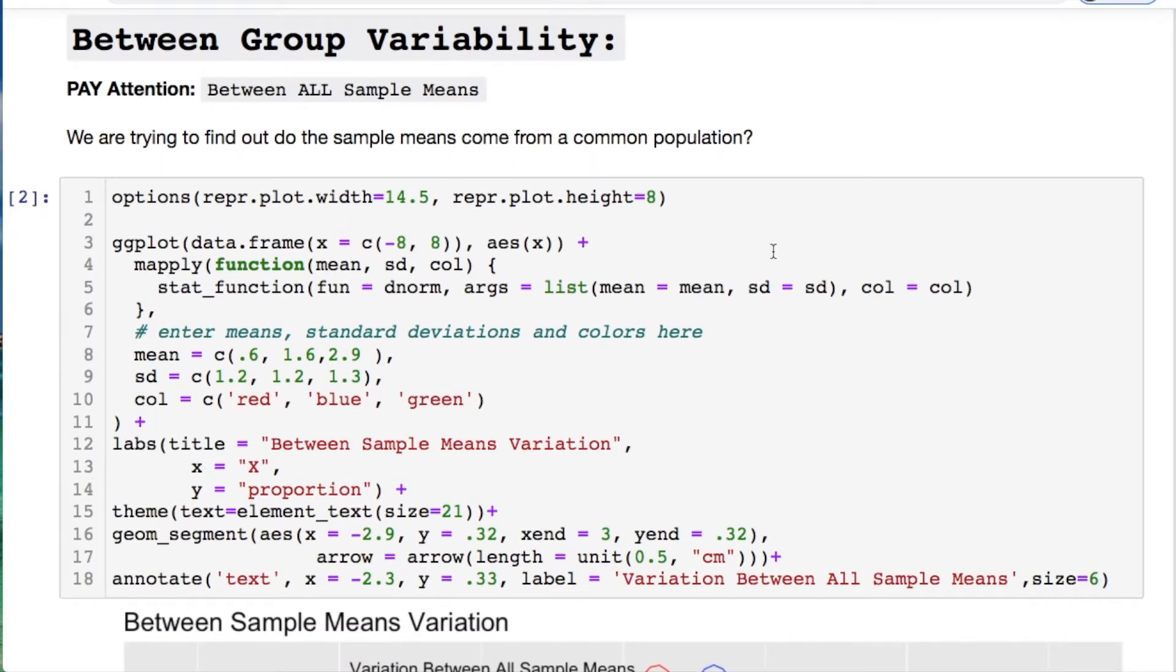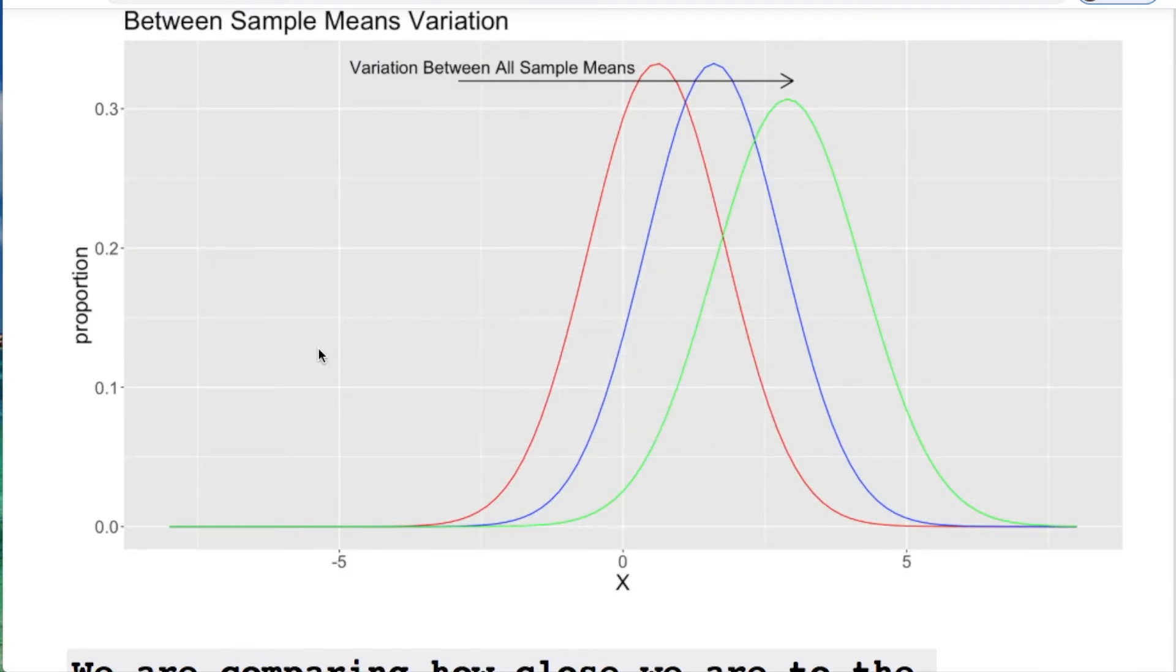The between group variability is interesting. Pay attention to this because there's a distinction. We're looking at between all sample means. I'll show a plot for this next. We're trying to find out do the sample means come from a common population. Feel free to pause this if you want the code. I said variation between all sample means. That's what's going on here.